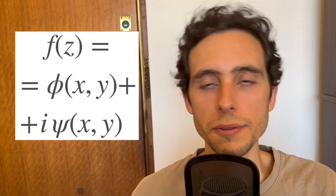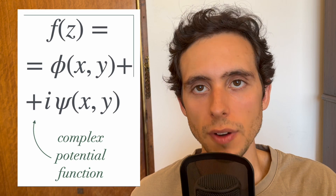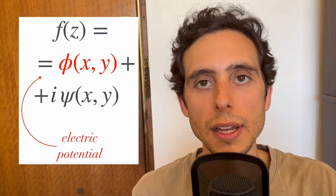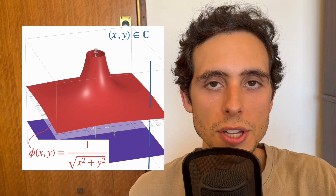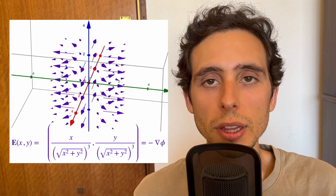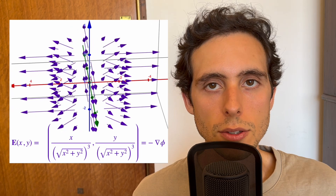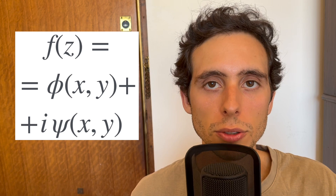We have our function f of z defined as phi of xy plus i psi of xy. This is the complex potential function in electrostatics. Phi represents the electric potential, and psi the stream function. The electric potential phi at a point xy on the complex plane represents the electric potential per unit charge at that point.